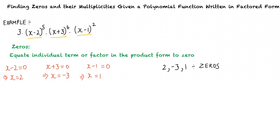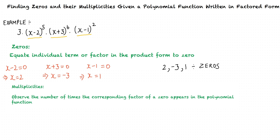Now we must determine the multiplicity of each factor. In order to determine the multiplicity of each factor, we observe the number of times that its factor appears in the function. In other words, the multiplicity of a zero in a polynomial function written in its factored form is the power to which the corresponding factor of the zero is raised to.